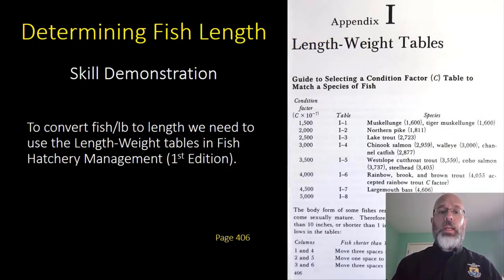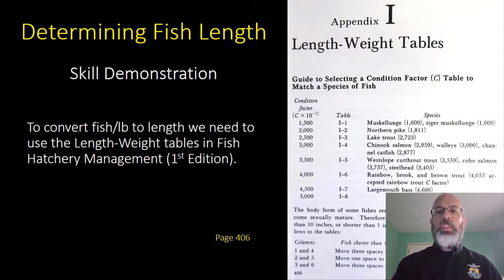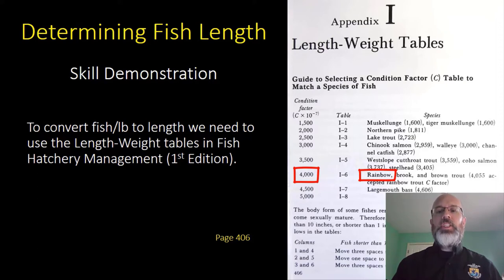The next thing we have to do once we have fish per pound is to convert that to length. To do that, we need to use the length-weight tables in Fish Hatchery Management. You'll notice that rainbow trout has a condition factor of 4,000 times 10 to the minus 7. That's the condition factor we're going to use moving forward.